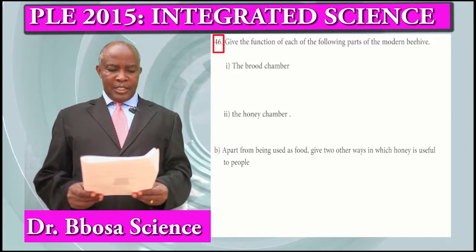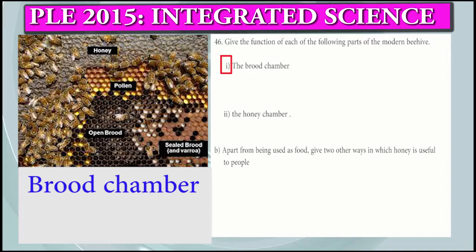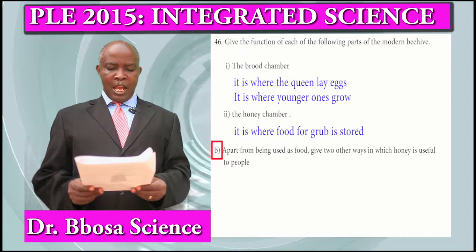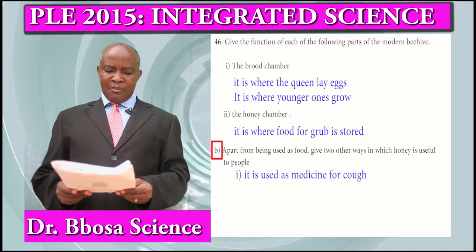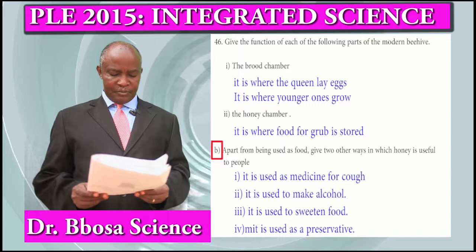Question 46a: Give the function of each of the following parts of the modern bee hive. Roman I — Brood chamber: it is where the queen lays eggs and where the young ones grow. Roman II — Honey chamber: it is where food for the grubs is stored. Part B: Apart from being used as food, give two other ways in which honey is useful to people. It is used as medicine for cough. It is used to make alcohol. It is used to sweeten food. It is used as a preservative.